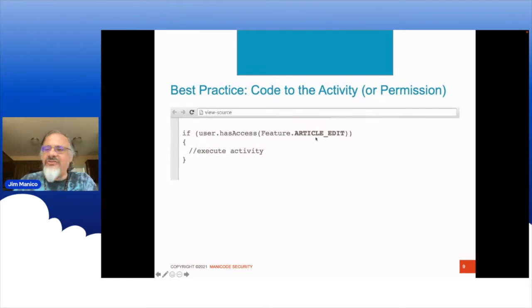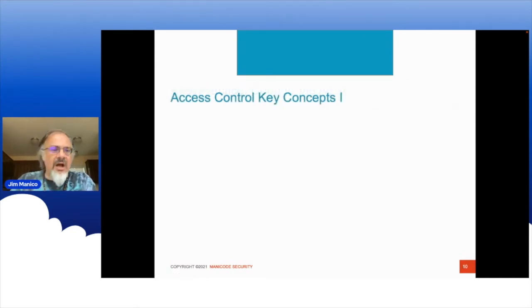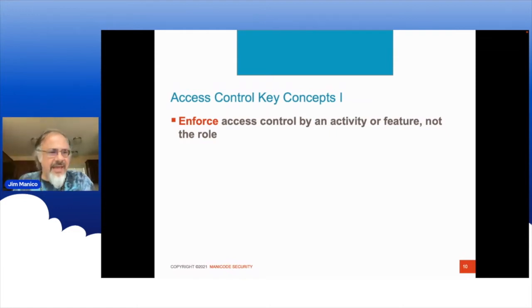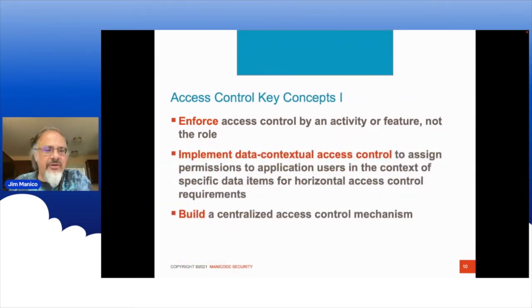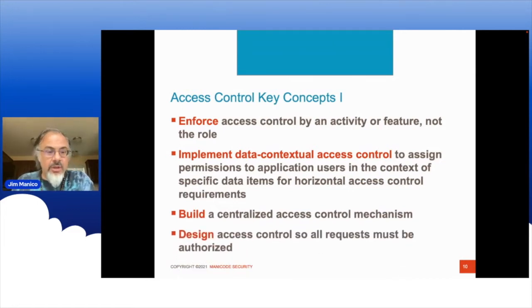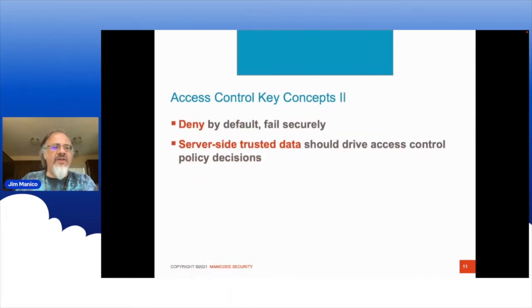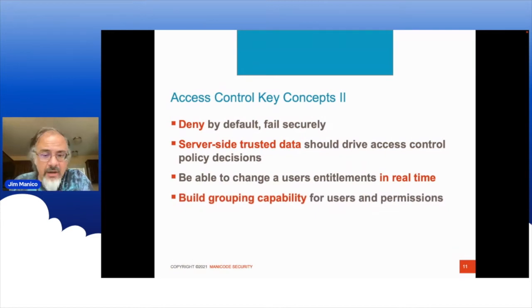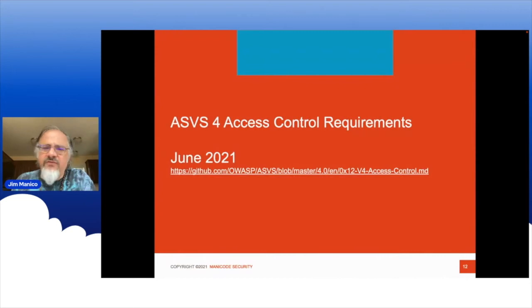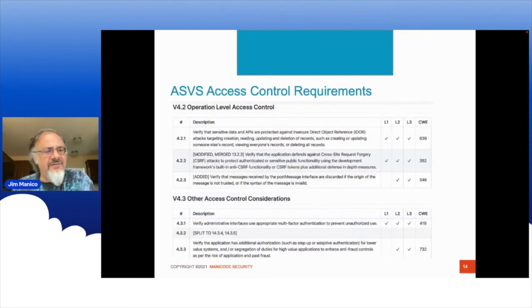A few quick tips: code to the activity — stop hard-coding roles as an enforcement point, because you're merging policy and code, and there are a lot of limits when you code like that. Enforce access control by the activity, not the role. Implement data-specific access control in some standard way with a centralized, data-driven access controller. Design so all requests go through a filter and must go through your access control layer. Deny by default, fail securely, and make sure the right data is driving access control policy. Change entitlements in real time and have proper grouping across your data structure. The ASVS 4.0 access control requirements give more nitty-gritty details on what we should be architecting for our developers.